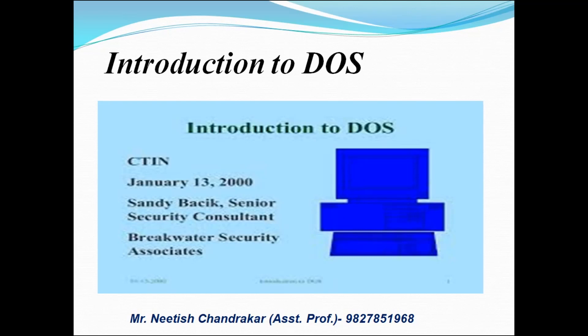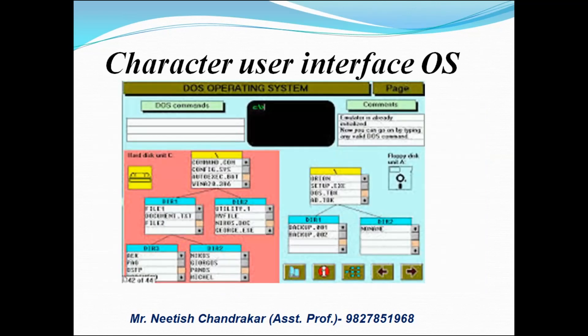MS-DOS एक Character User Interface Operating System होता है। Character User Interface का मतलब क्या होता है — ऐसा Operating System जिसमें आप Character के थ्रू Command देंगे, User Command देता था, then Action Perform होता था। जैसे यहाँ पे दिख रहे हैं, DOS Command लिखा हुआ है, यह CMD Command है। आप उस Command को जैसे Input करेंगे, then Enter करते ही आपको Output देगा।